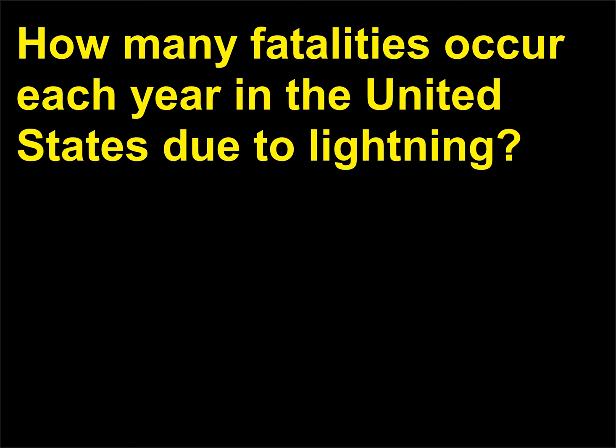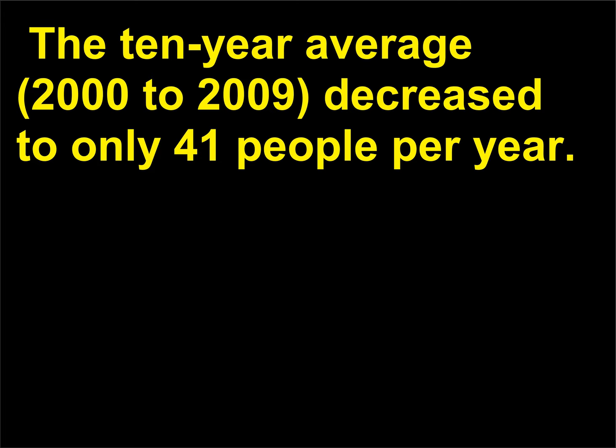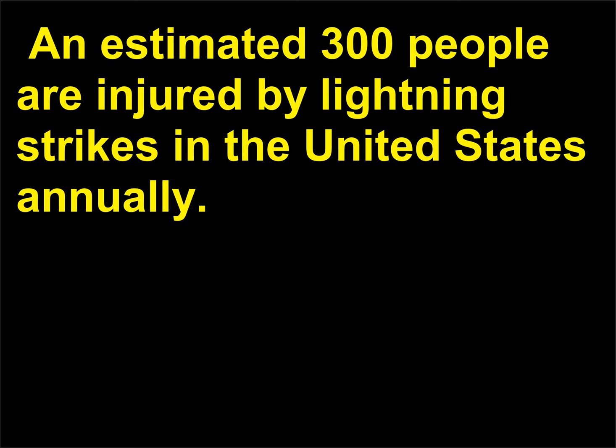How many fatalities occur each year in the United States due to lightning? During the years 1980 to 2009, an average of 57 people were killed each year by lightning. The 10-year average from 2000 to 2009 decreased to only 41 people per year. An estimated 300 people are injured by lightning strikes in the United States annually.